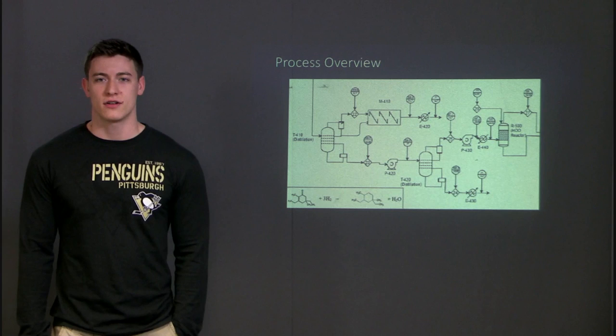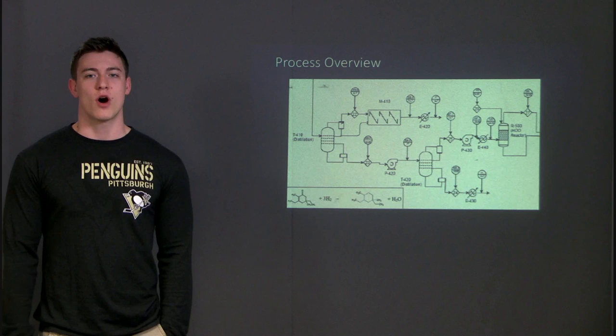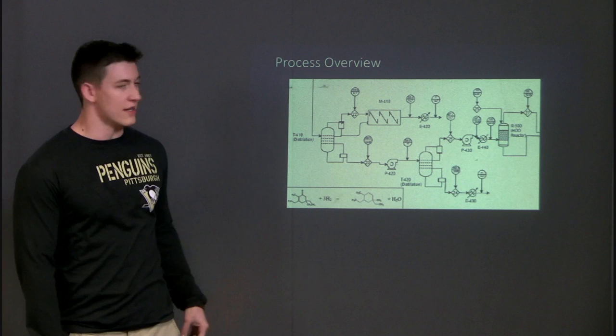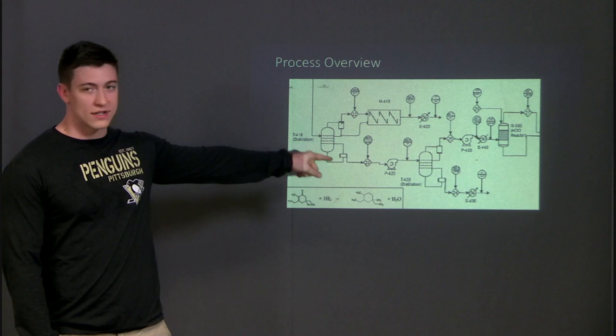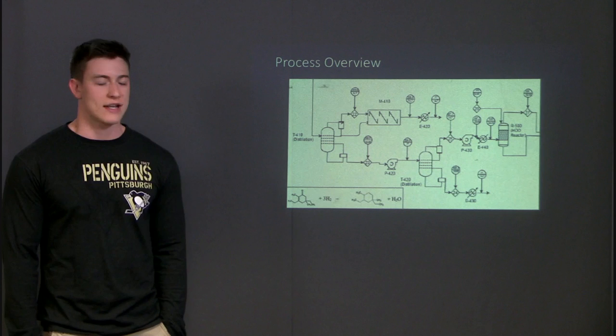The stream from the reactor is then pumped to the first distillation column, which is T410 there, which was designed to remove water and other lighter boiling impurities. These leave in stream 22 in the distillate as waste. The bottoms from the tower are then pumped into the second distillation column, which is T420 down there. In this column, the heavier oligomers that were produced in the trimerization reactor are separated into the bottom stream, which then go to waste.